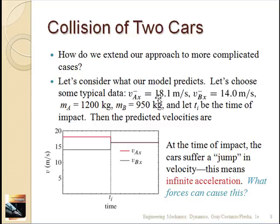For example: car A weighs 200 kilograms, car B 950 kilograms. The initial velocity of car A is 18.1 meters per second, car B is 14 meters per second. So car A is moving 4.1 meters per second faster than B, it overtakes it at some point, they collide, and they stick together. What's the final velocity?